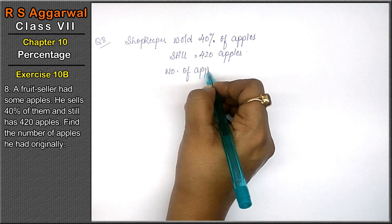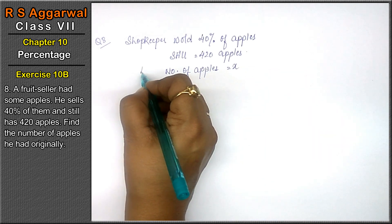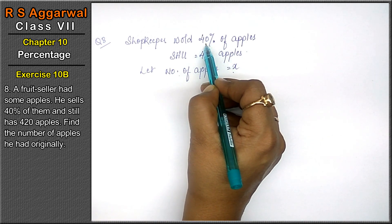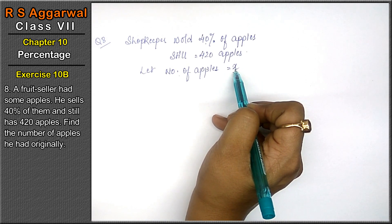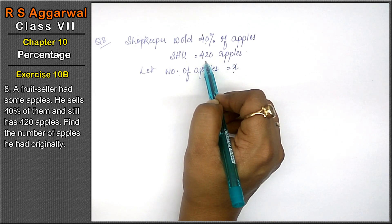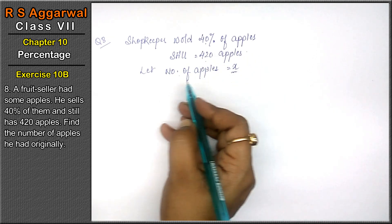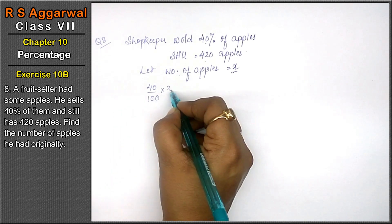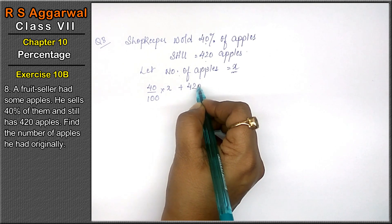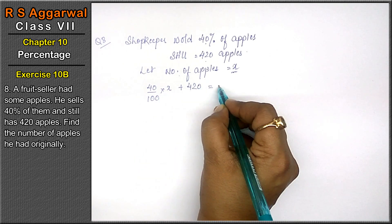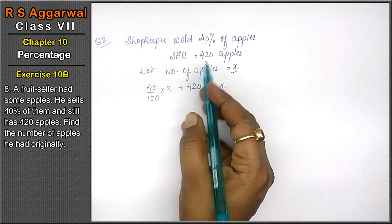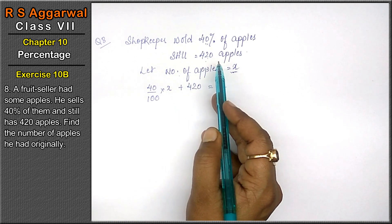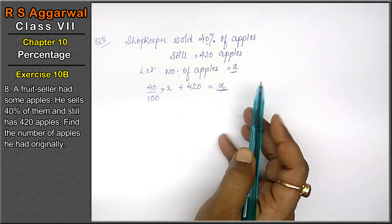Let the number of apples be x. He says that 40% apples sold, and after selling 420 apples remain. 40% of total apples plus 420 apples equals total apples.